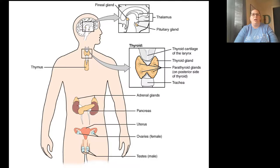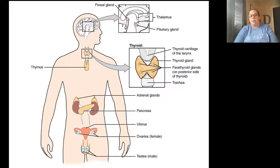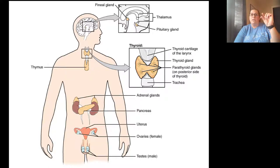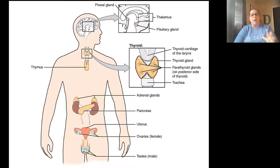Looking at this diagram, you can see many of the endocrine glands and tissues. The pineal gland and pituitary gland are visible in a blown-up view of the brain, along with the hypothalamus. The thymus and thyroid are in the neck and chest area. The adrenal glands sit on top of the kidneys like little party hats. You can also see the pancreas, ovaries, and testes.